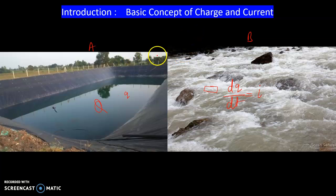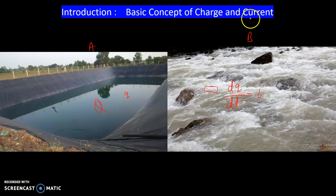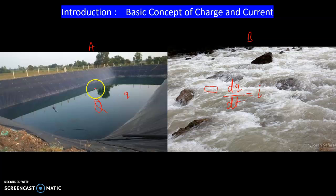The objective of this picture is to tell you that charge is like water and current is the rate of change of water at a particular point. So, with this analogy, we can understand that whenever there is a current, it is actually the flow at the rate at which the water is flowing in the river.